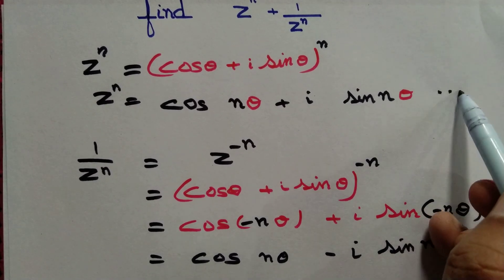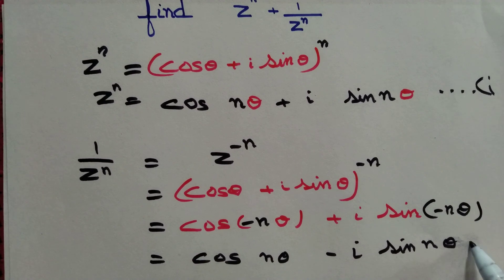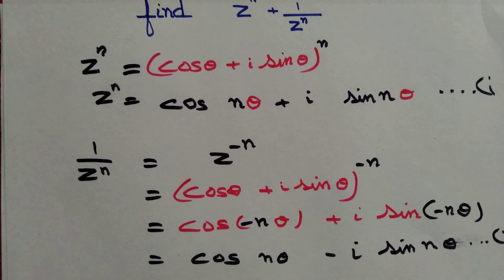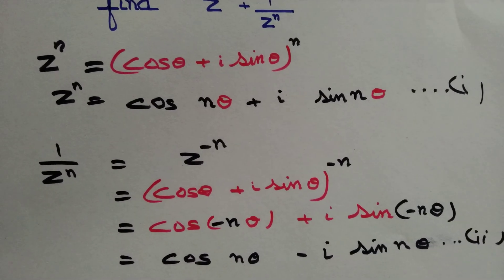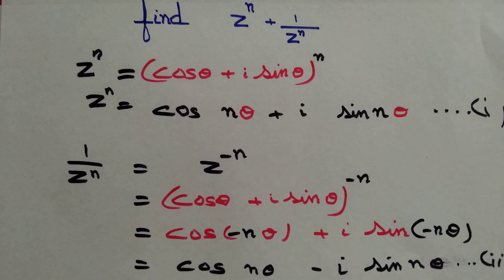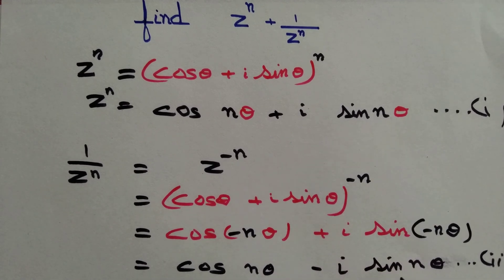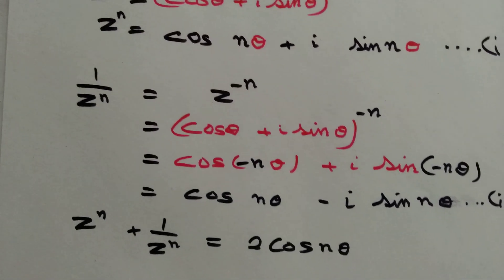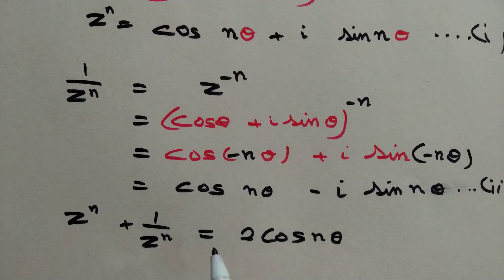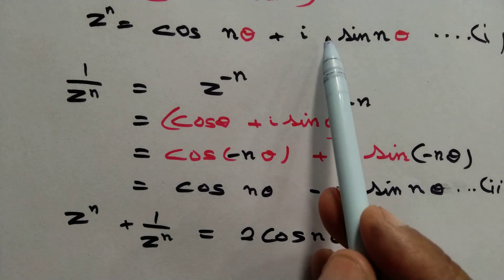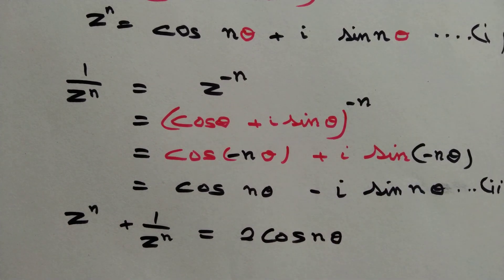We add equation 1 and equation 2 to obtain z to the power n plus 1 by z to the power n equals 2 cos nθ, because i sin nθ and minus i sin nθ cancel each other. So z to the power n plus 1 by z to the power n is simply equal to 2 cos nθ.